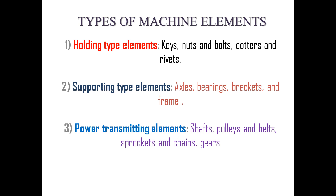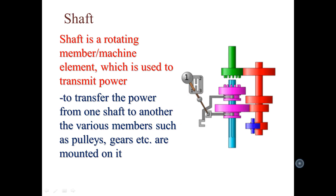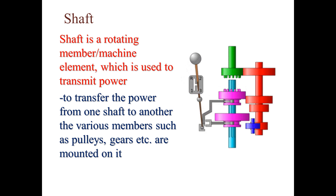The second type is supporting type machine elements — those which support other machine components. Examples include axles, bearings, brackets, and frames. The third type is power transmitting machine elements, which transmit power. Examples include shafts, pulleys, belts, chains, and gears. Gear drives and chain drives in bicycles and automobiles are used to transmit power, so chains, pulleys, and belts fall into the power transmitting category.